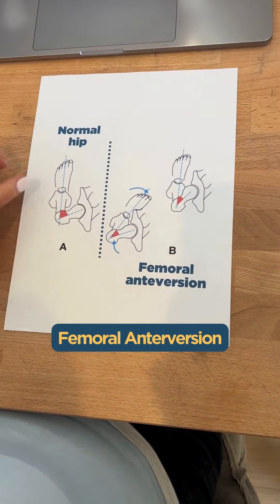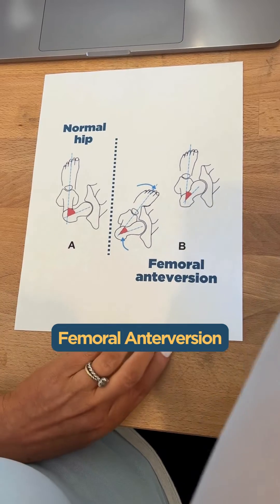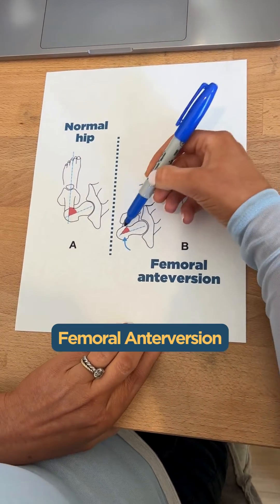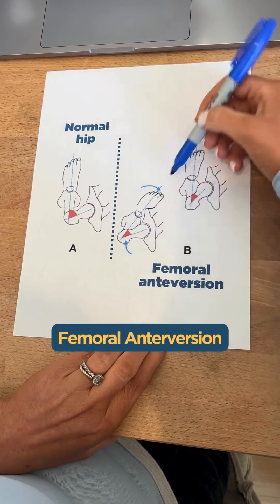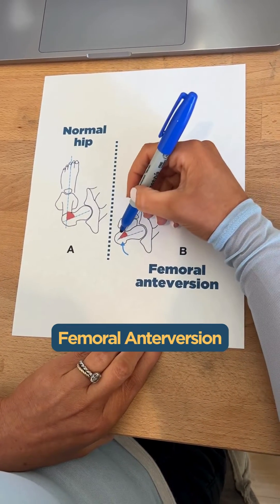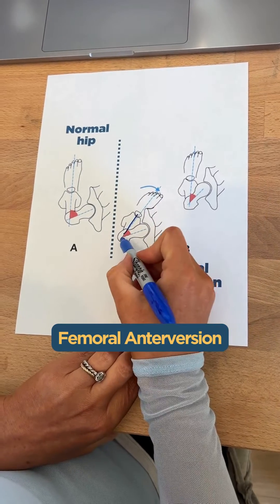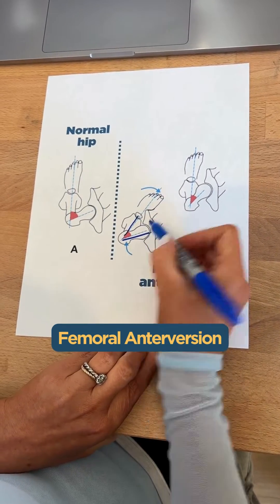With femoral anteversion, the femur is actually twisting inwards. You can see that the angle between the femoral neck and the femoral shaft is actually decreasing.